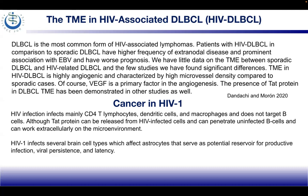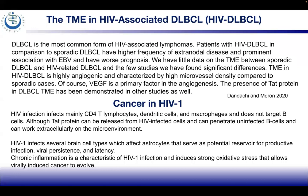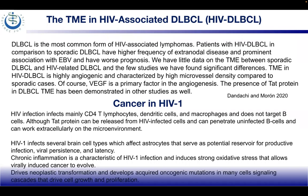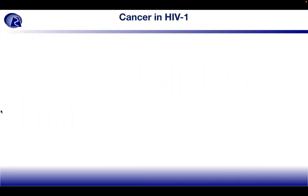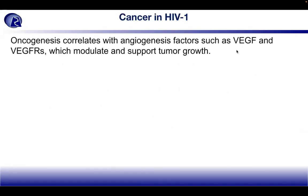HIV-1 does indeed infect several brain cell types, which can affect astrocytes that serve as a potential reservoir for productive infection, viral persistence, and latency. There is chronic inflammation characteristic of HIV-1 infection that induces strong oxidative stress, allowing virally induced cancer to evolve, driving neoplastic transformation and developing acquired oncogenic mutations in cellular signaling cascades that drive cell growth and proliferation.